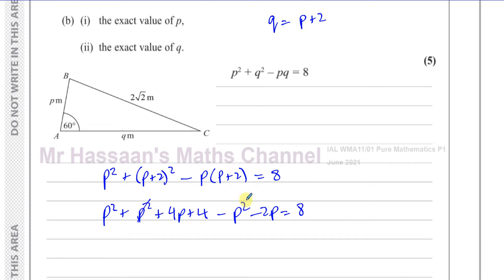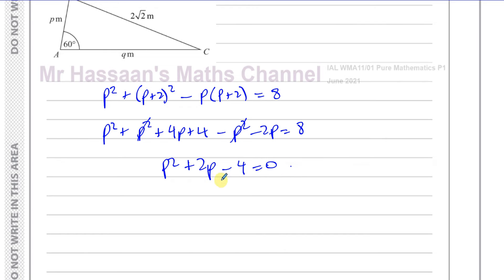Combining like terms: the P squared terms give 1P squared, and 4P minus 2P gives plus 2P, and 4 minus 8 gives minus 4 equals 0. So we have a quadratic equation: P squared plus 2P minus 4 equals 0. The question says find the exact value, which indicates this cannot be factorized, because there are no two integers that multiply to negative 4 and add to positive 2.